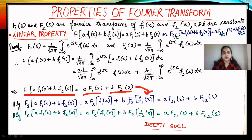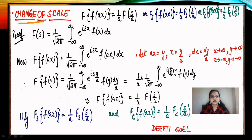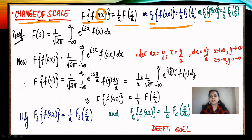In this way we prove the linear property, which can also be applied on the Fourier sine and Fourier cosine transforms. Moving to the next property — the change of scale property. Its statement is: when the Fourier transform is applied on f(ax), where x is multiplied by a constant a, the answer is (1/a)·F(s/a). The s is replaced by s/a. This result applies to Fourier sine and cosine transforms as well: Fₛ[f(ax)] = (1/a)·Fₛ(s/a) and Fꜭ[f(ax)] = (1/a)·Fꜭ(s/a).